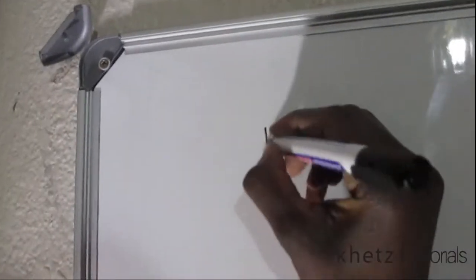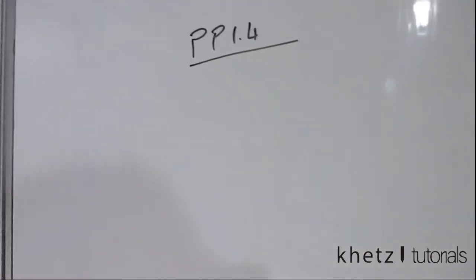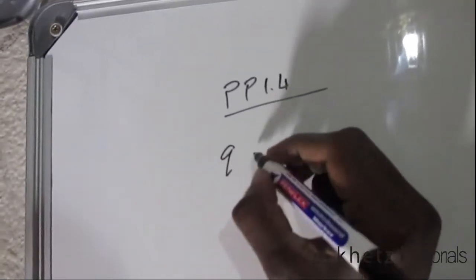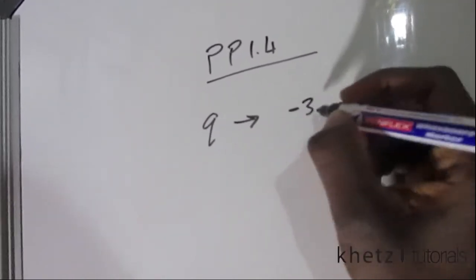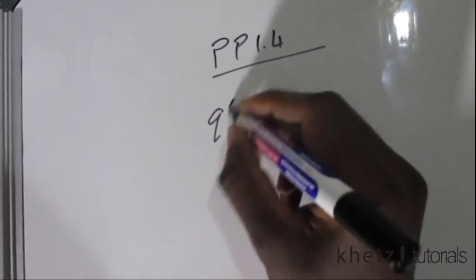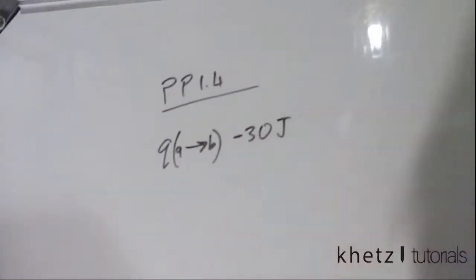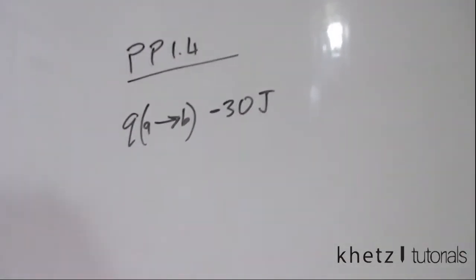Welcome back to Katz Tutorials. In this video, we are going to be doing practice problem 1.4. The question says to move the charge q from point a to b requires negative 30 joules, so we have to find the voltage drop.